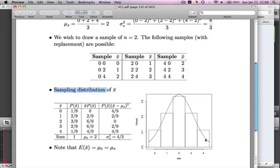And it looks vaguely normal. So there's a normal curve superimposed on it, and that's not an accident. Sample of two is quite small, but as the sample size increases, this will, it turns out, approach a normal distribution.